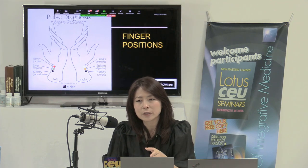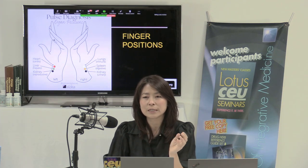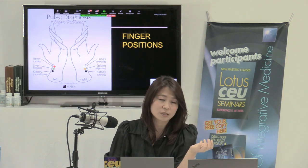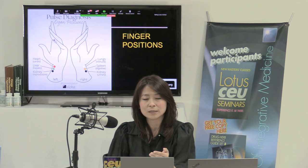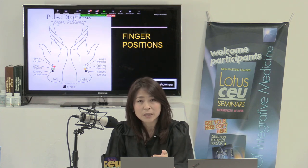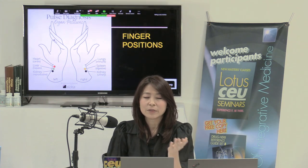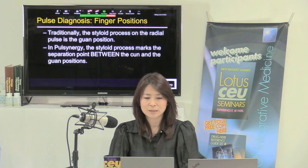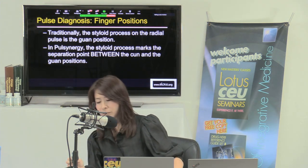Now the basics of pulse positions — the right and left sides correspond to their respective organs. In Dr. Chang's system, the right side kidney position is urinary function and the left side is reproductive function. So if you're detecting infertility, go to the left side. Everything else is similar: right cun is lung and large intestine, right guan is spleen and stomach; left cun is heart and small intestine, left guan is liver and gallbladder.